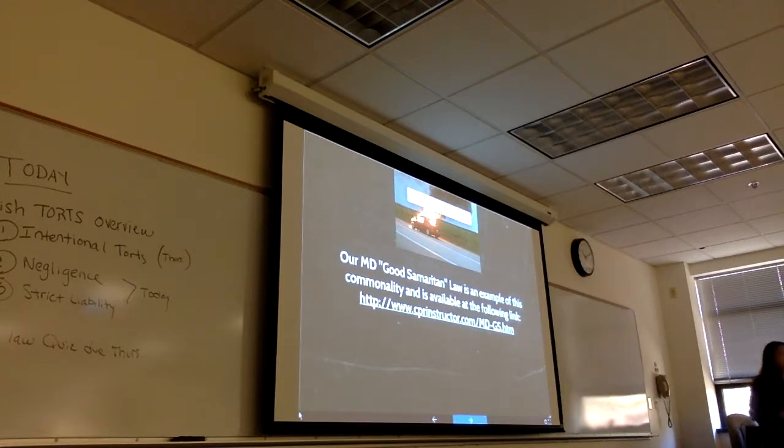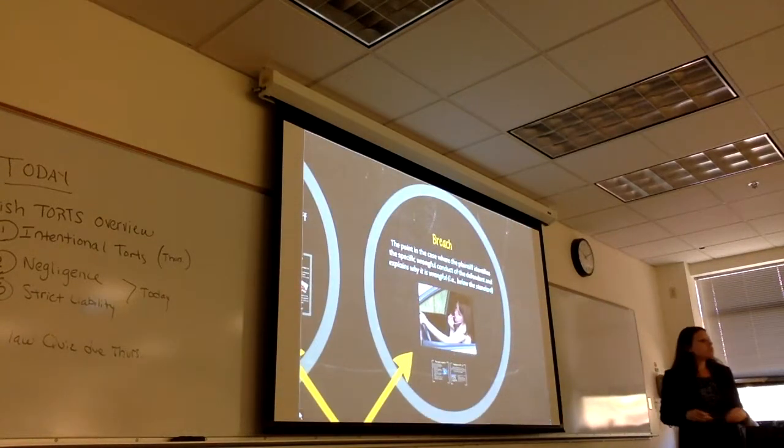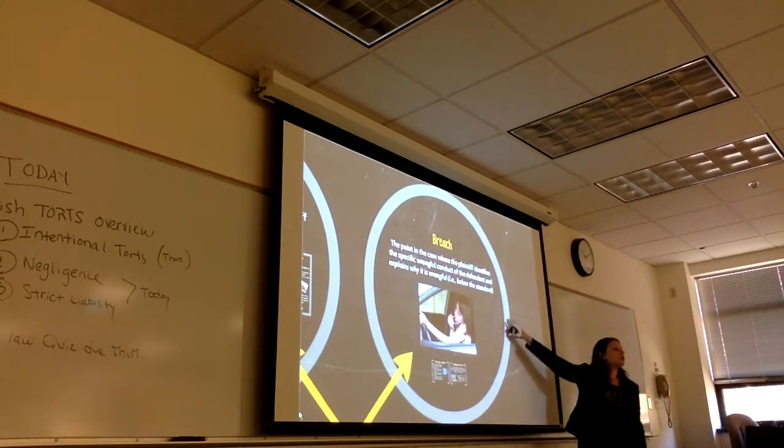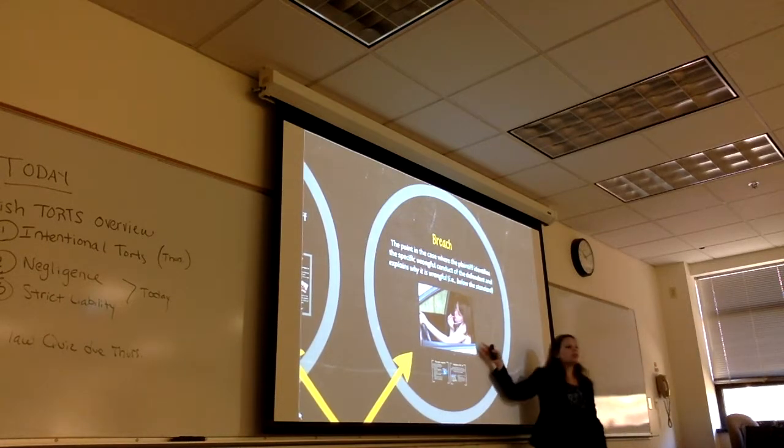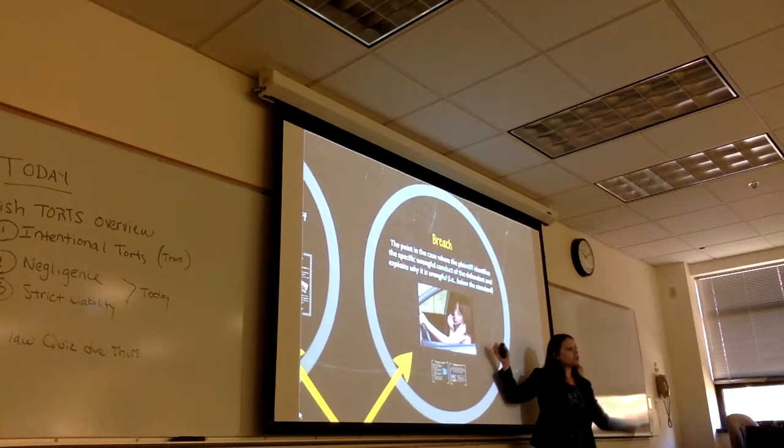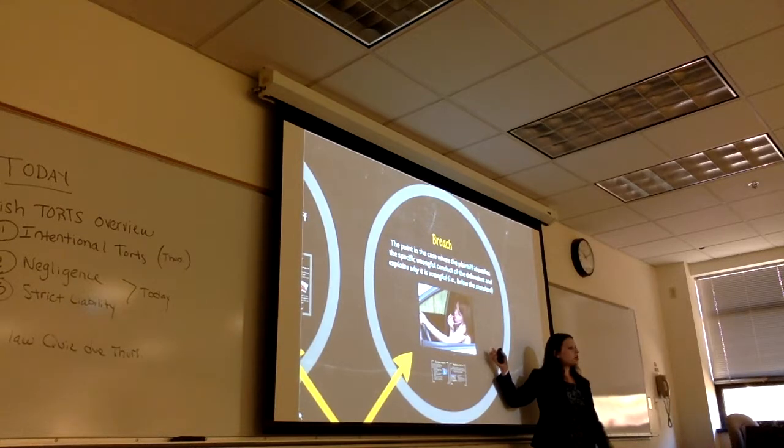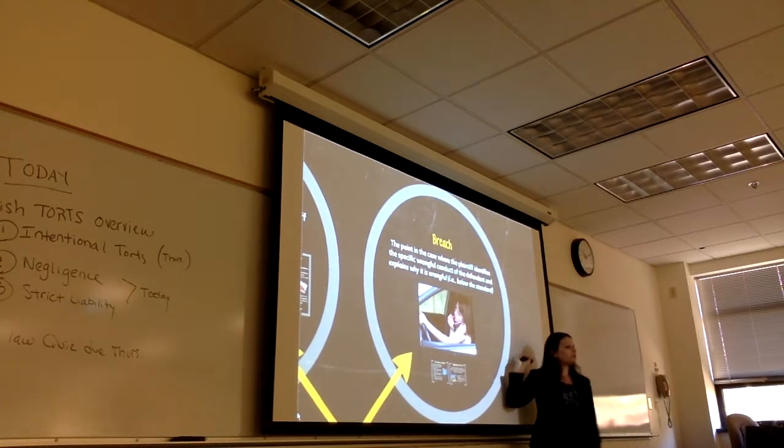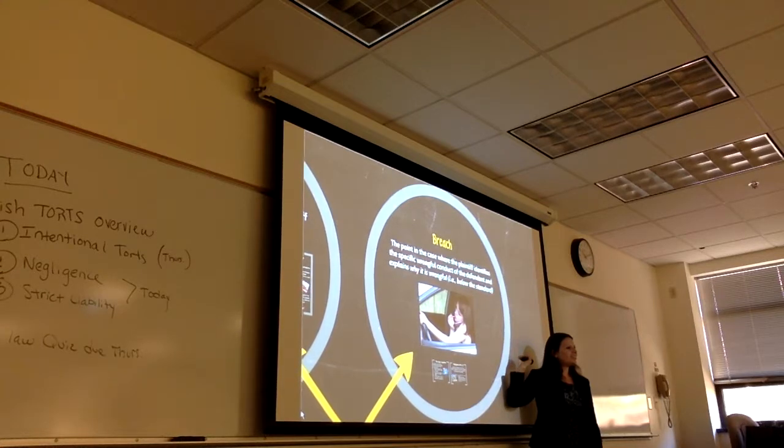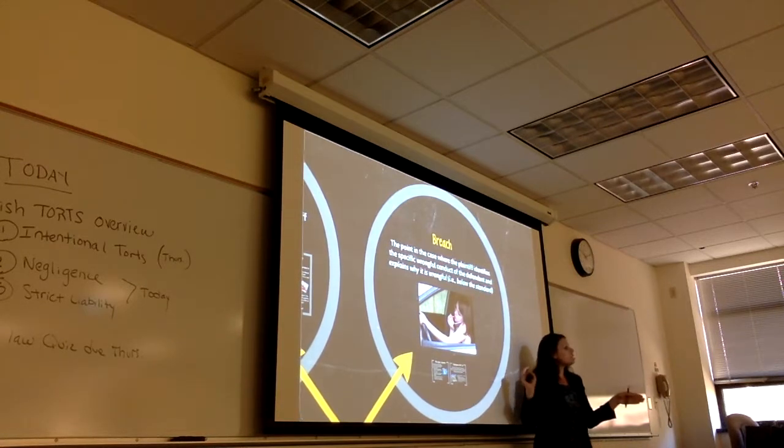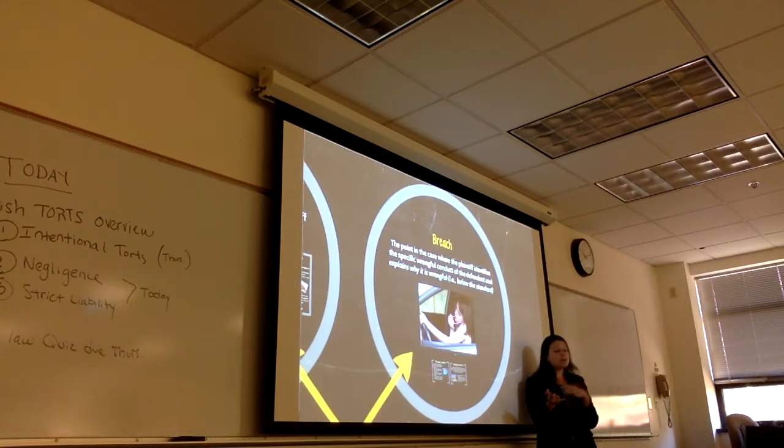Going back to our overview here, we've looked at our obligations to help people. The next element to prove somebody is negligent is that they broke that obligation. This is the point in the case where you say, you did something wrong. You explain why it was wrong. For example, when you are driving, what do you have a duty to do? What does a reasonable driver have to do? Pay attention. Drive safely, right? So don't speed. Pay attention. It can be distracted driving. We have a law in Maryland not to even have your phone in your hand. You absolutely should not be texting.